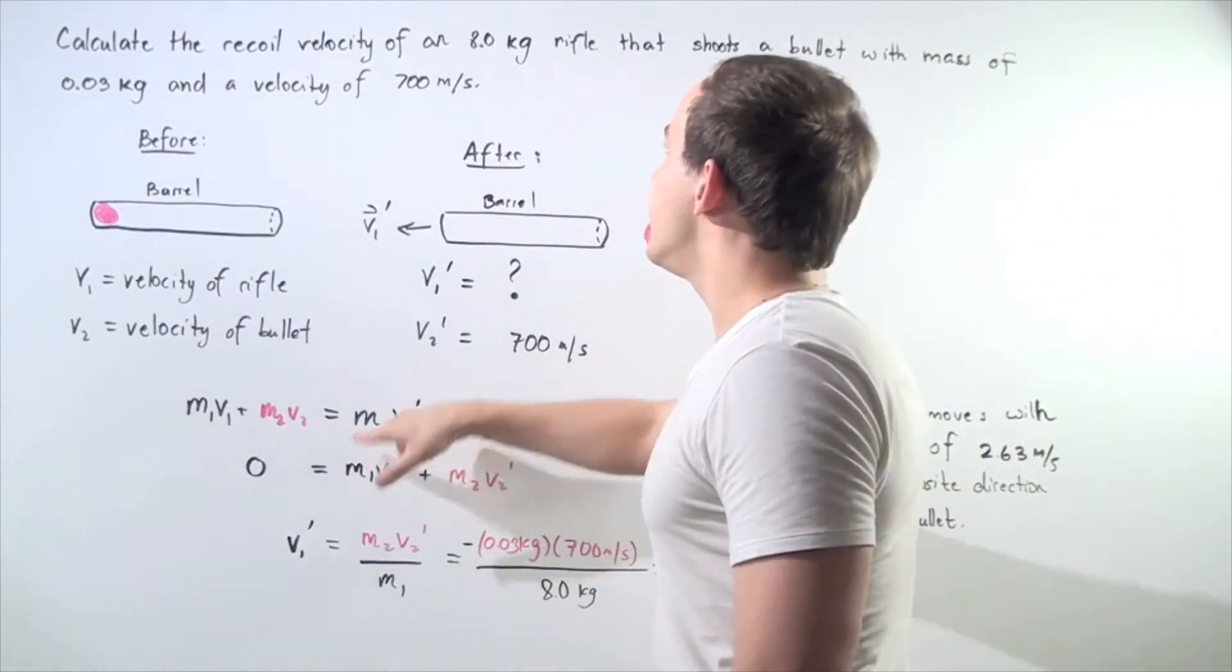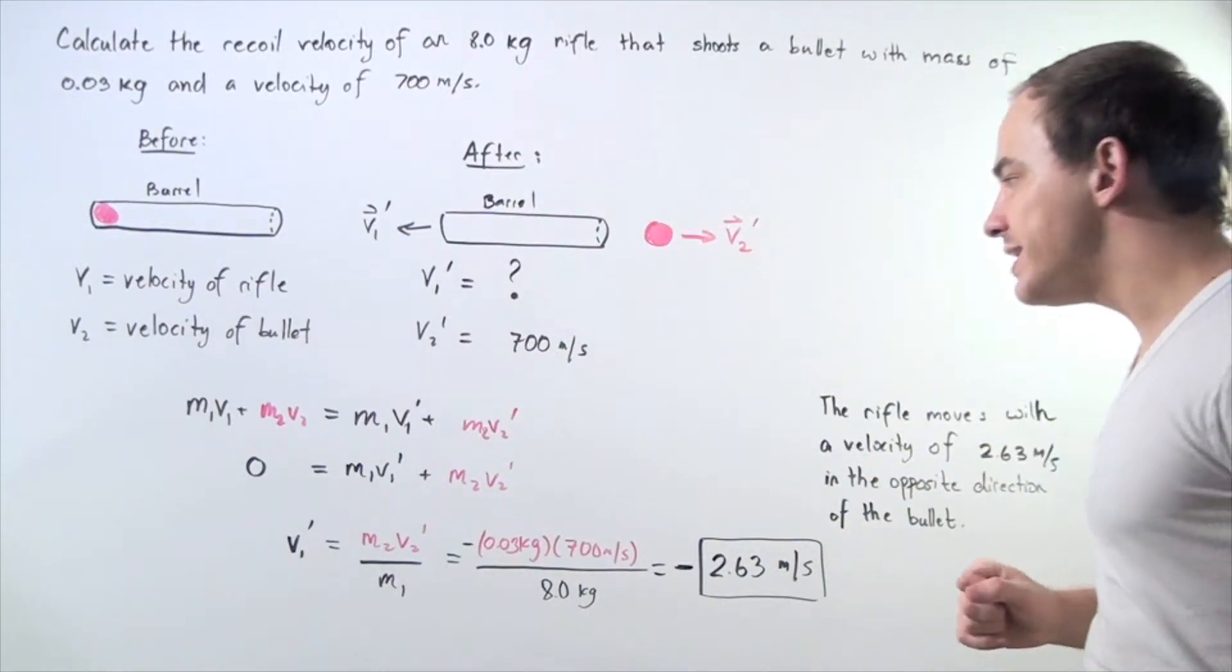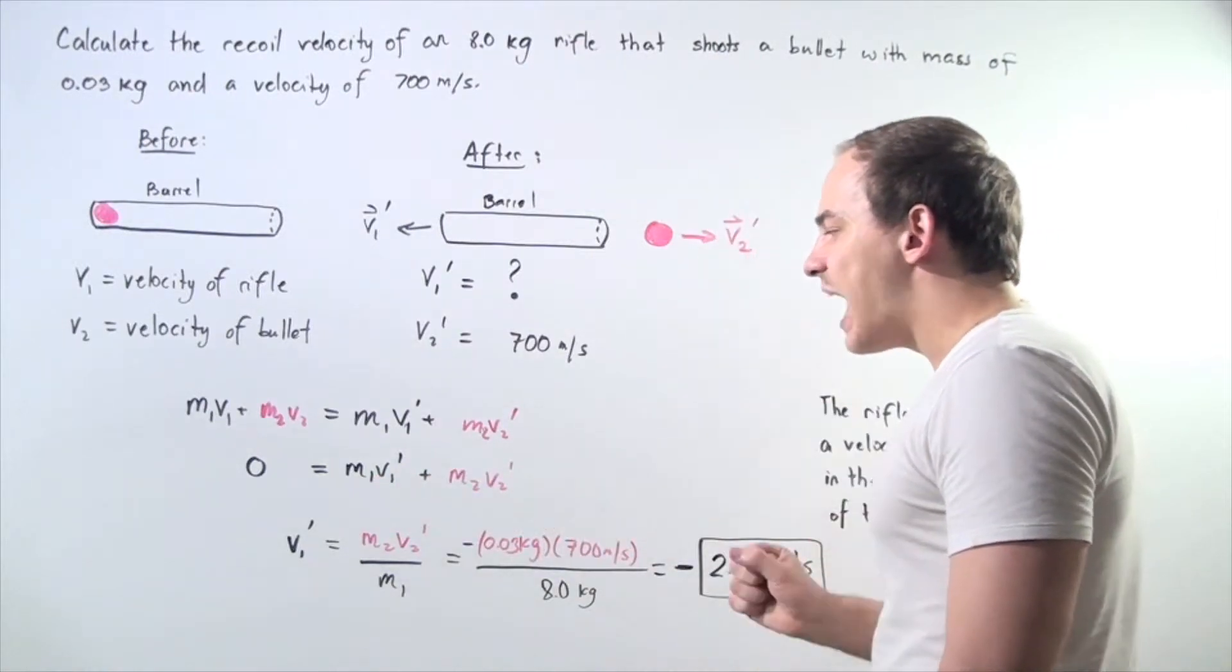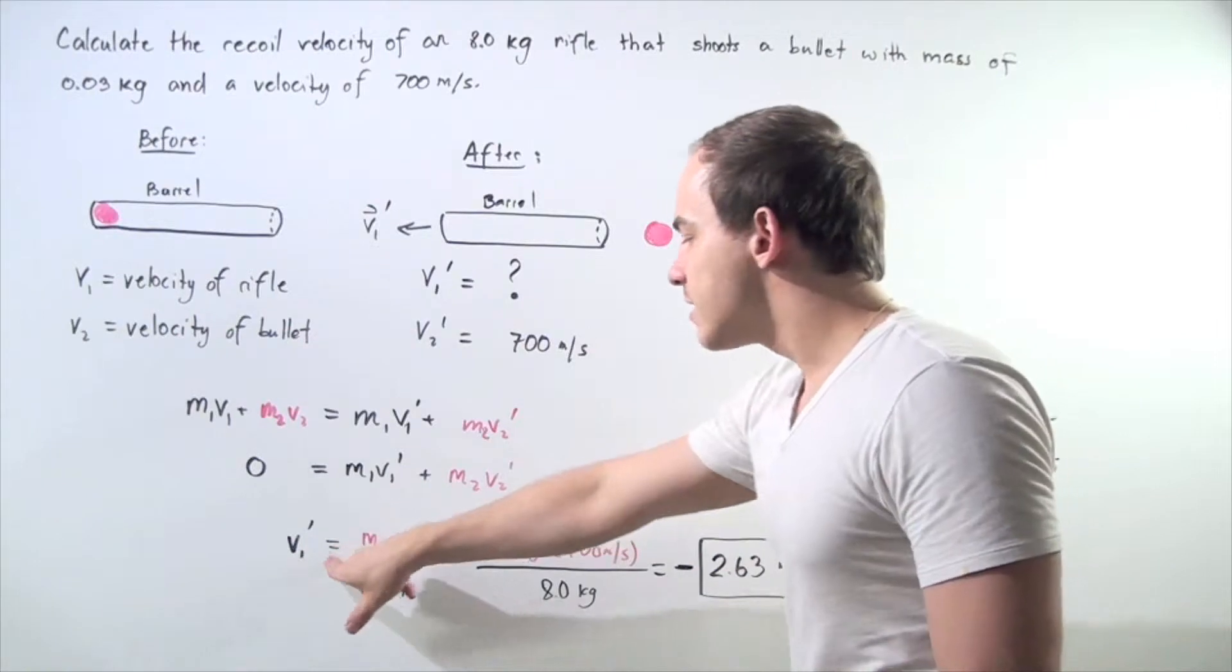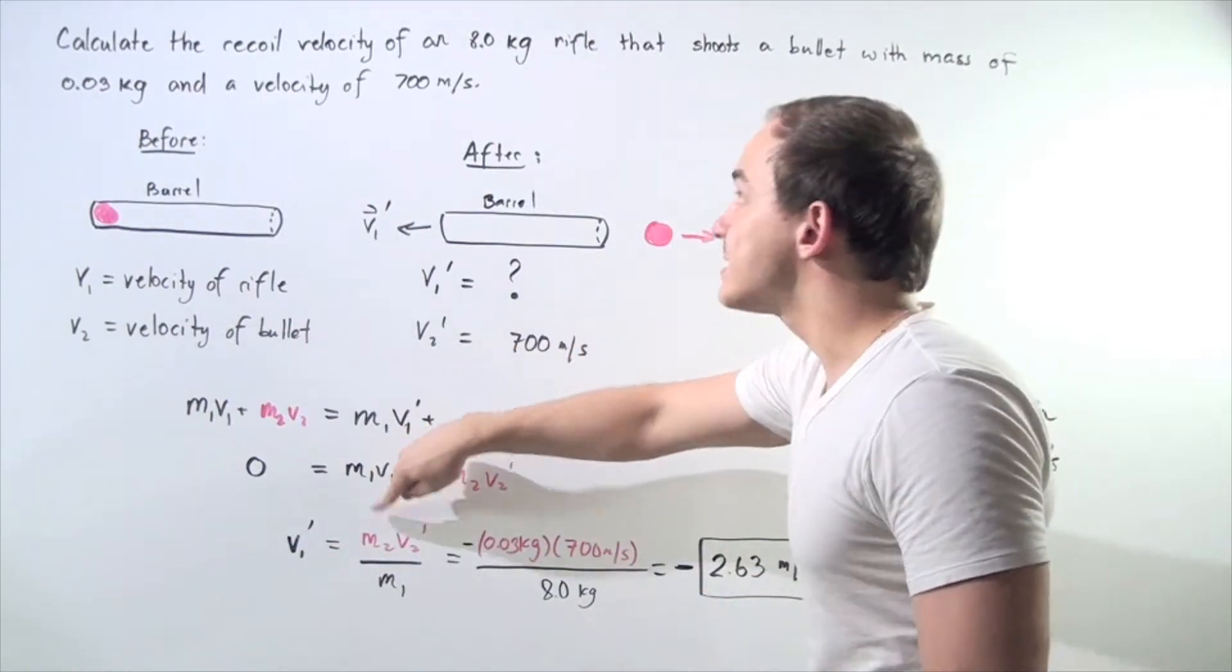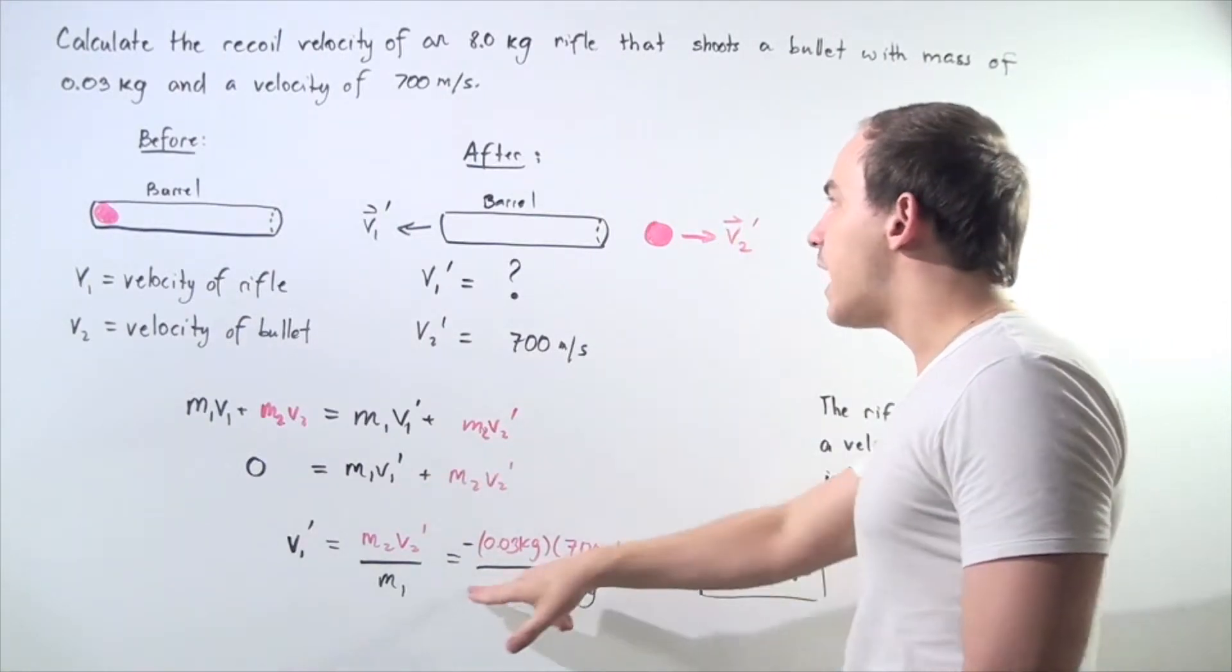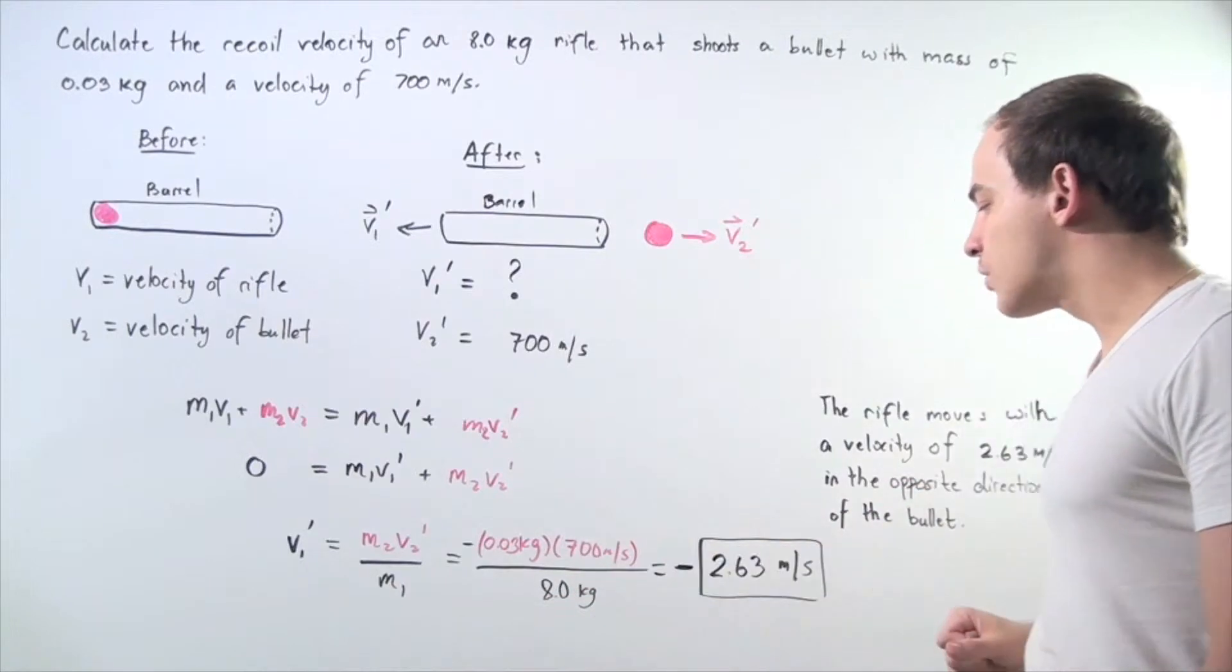We know M1 is 8 kilograms and M2 is 0.03 kilograms. We can rewrite this equation and solve for V1 prime, the recoil velocity, so that equals mass of our bullet multiplied by the velocity of the bullet divided by the mass of the barrel rifle system, 8 kilograms.